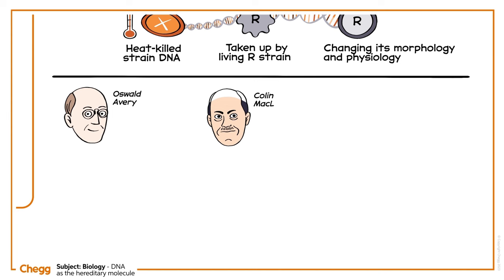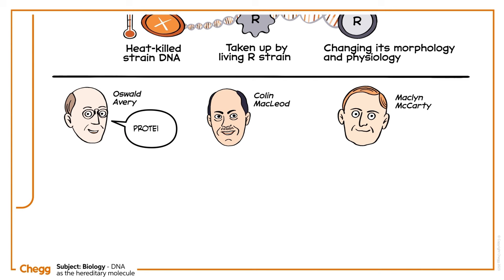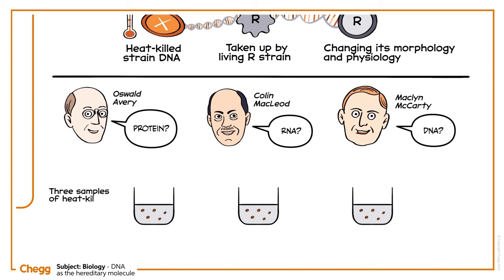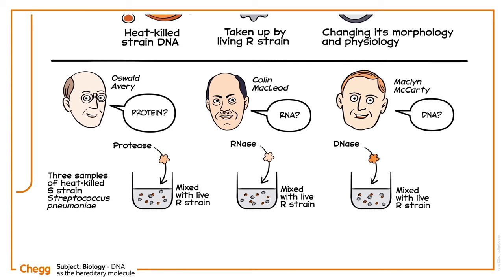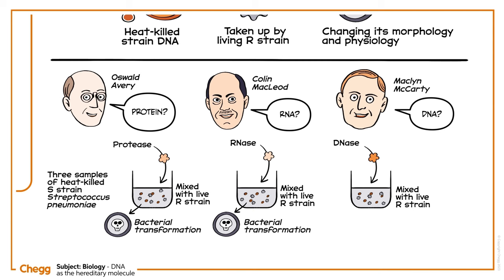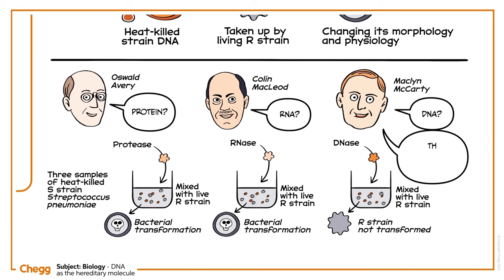Three scientists — Oswald Avery, Colin McLeod, and Macklin McCarty — sought to find out if the transforming principle was protein, RNA, or DNA. They took three samples of the heat-killed S strain of Streptococcus pneumoniae. To the first they added protease, to the second RNase, and to the third DNase. These enzymes break down proteins, RNA, and DNA respectively. Live R strain bacterial cells were then mixed into each sample. The bacteria in the first two samples were transformed, as proved by the presence of live S strain cells in the cultures. But the bacteria in the third sample — the sample with DNase — were not. No intact DNA means no bacterial transformation. Therefore, the team correctly concluded that the transforming principle is DNA.